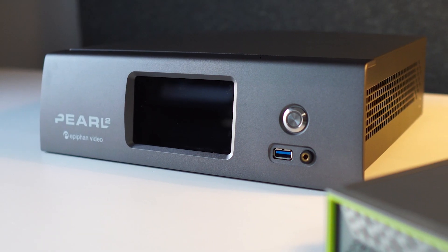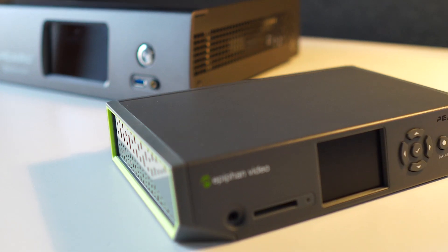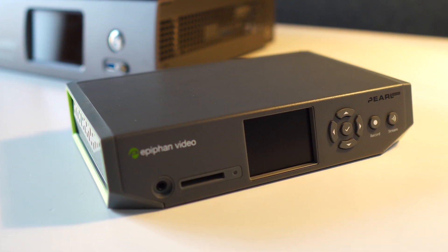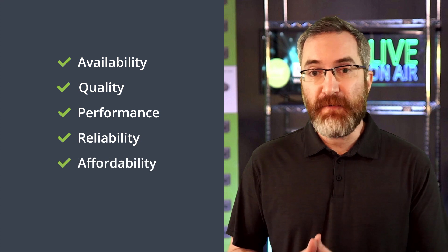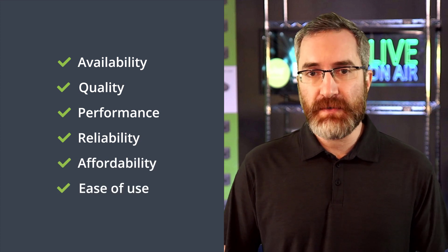By hardware encoder, I mean a dedicated appliance built from the ground up for live streaming and recording. Epiphan's own Pearl 2, Pearl Mini, and Pearl Nano are great examples. Now to compare the two, we'll cover six key areas: availability, quality, performance, reliability, affordability, and ease of use.